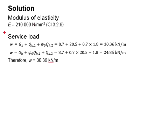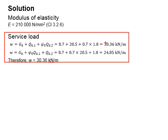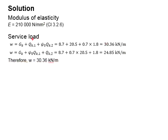Next, you need to determine the service load. There are two variable loads, which include the imposed roof load and also the snow load. According to Eurocode, there will be a leading variable action and an accompanying variable action.